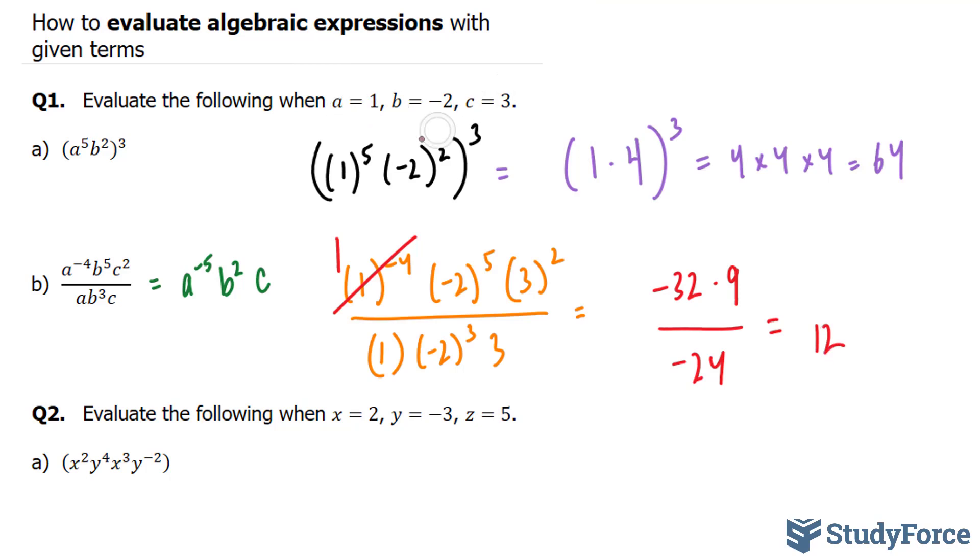Now, had you substituted these values into here, it is very likely that you would have also gotten 12. But let's double check. 1 to the power of negative 5 times negative 2 to the power of 2 and c is equal to 3. This would become 1. This right here would become positive 4. And if 3 stays the way it is, 4 times 3 is 12.